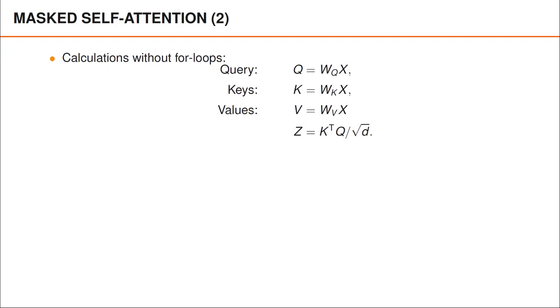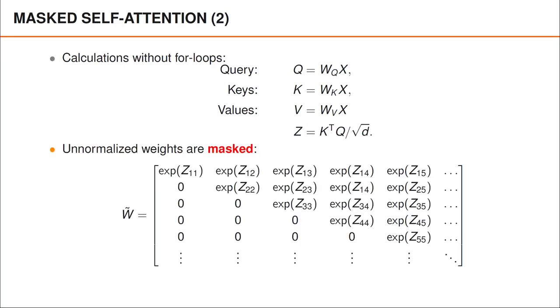The complete expression for a masked self-attention layer is easy to express in matrix form. We first compute queries, keys, values, and z values using the weight matrices WQ, WK, and WV and the standard expressions. Expressed in terms of the unnormalized weights, we then apply a mask that sets many of the weights to zero.